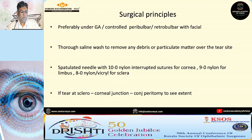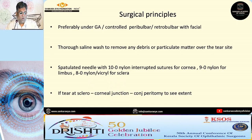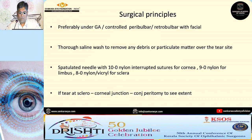Surgically, it is generally done under GA for very large open globe injuries, or under peribulbar or retrobulbar with facial block to prevent expulsion of intraocular material. A thorough saline wash has to be done to remove debris or particulate matter over the tear site. Generally, 10-0 nylon interrupted sutures are used for the cornea, 9-0 for the limbus, and 8-0 for scleral repair. If the tear is at the sclerocorneal junction, a conjunctival peritomy has to be done to look at the extent of the tear.